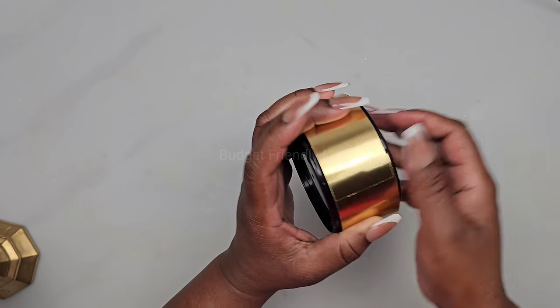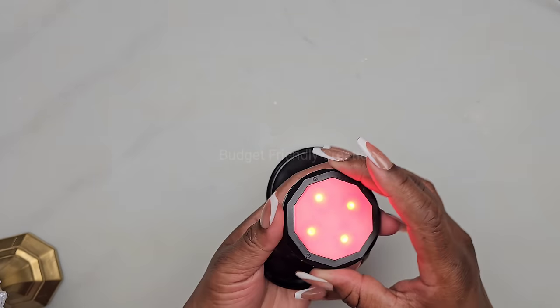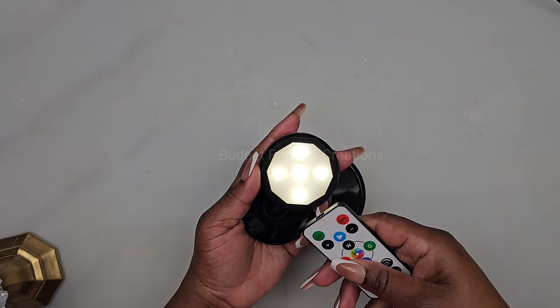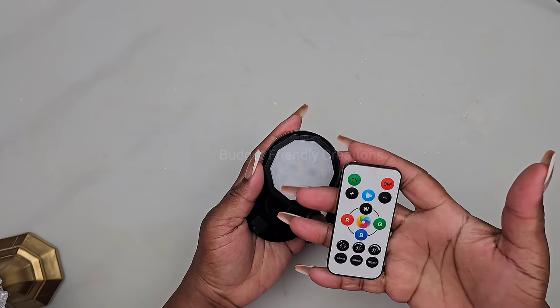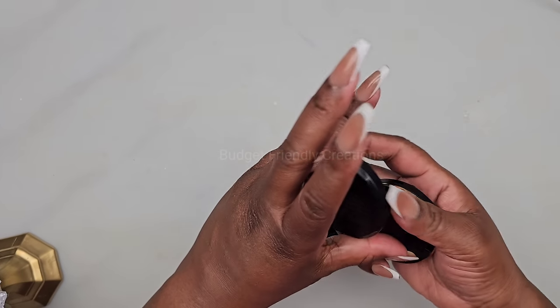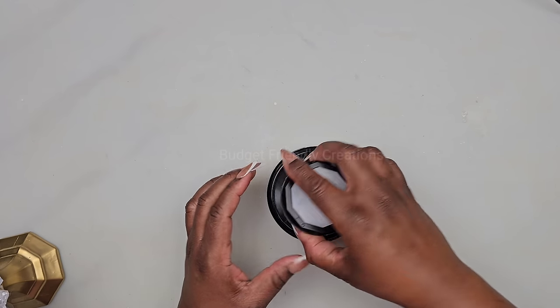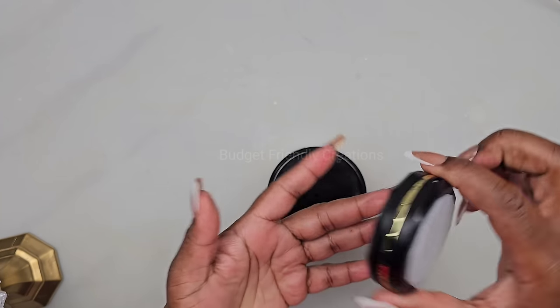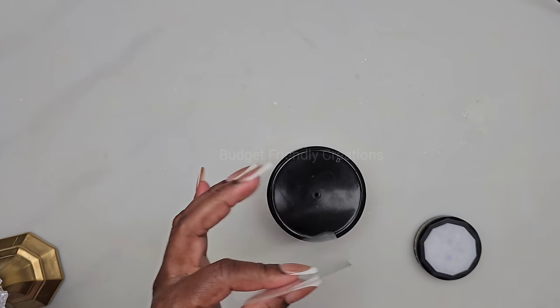Now these are the lights that I'll be using. They come three to a pack. I'm just going to be using two for this project. It's RGB lights and they're rechargeable and they come with remotes. Now this is the base of the light. We're going to place the base right on the lid on the inside of the lid.